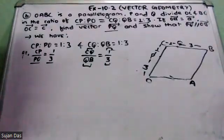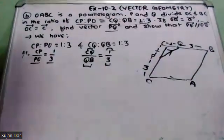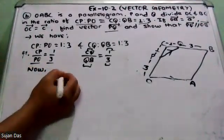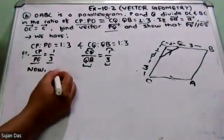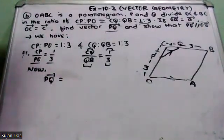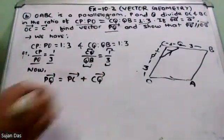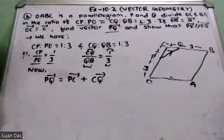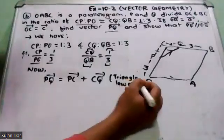Now we have to find PQ vector. PQ vector can be found as PC vector plus CQ vector, by using the triangle law of vector addition.